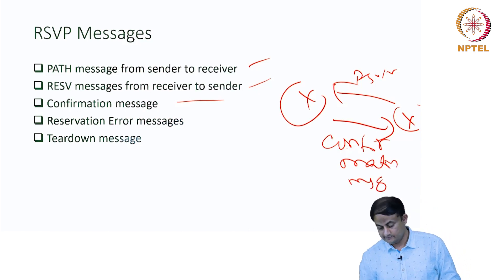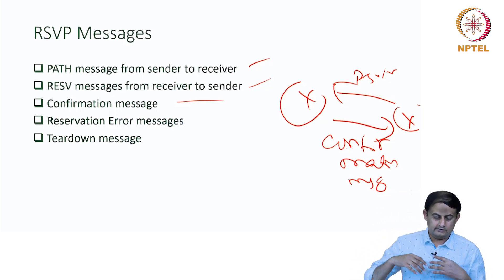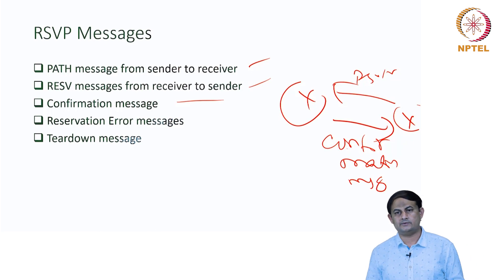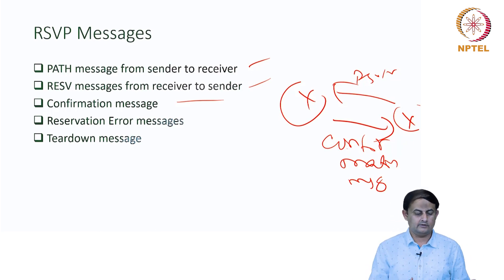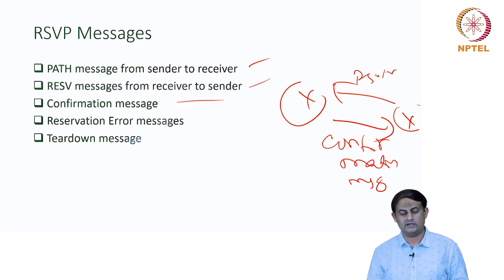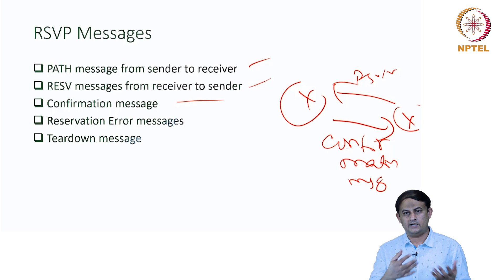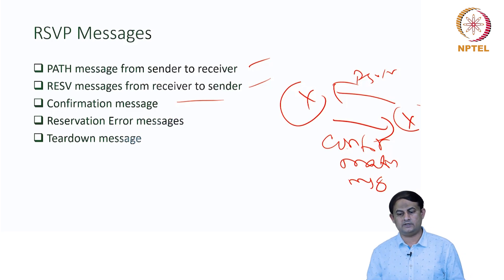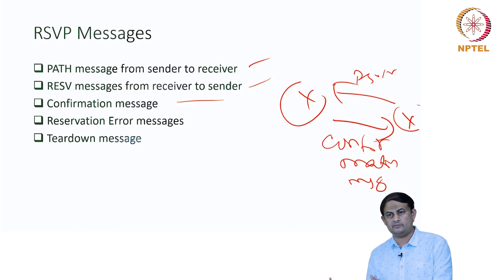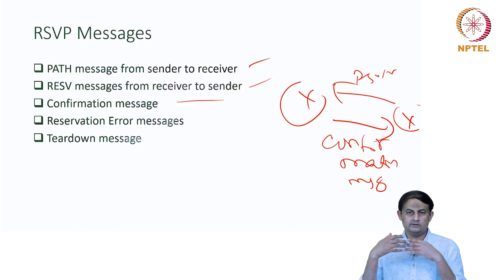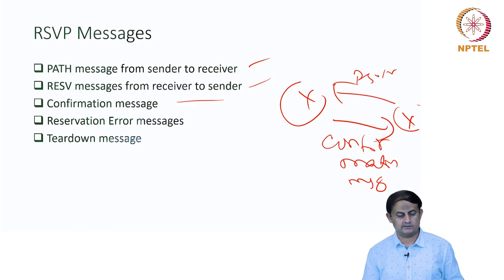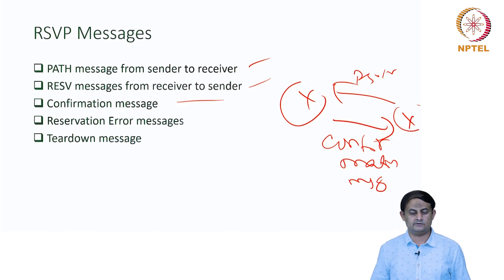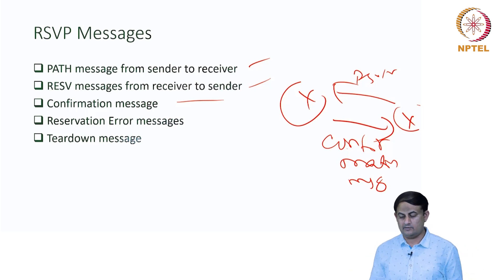The confirmation message confirms that whatever was asked for has been reserved. Occasionally, error messages may arise — called resource reservation error messages — which can be either a path error message or a reservation error message. If the path message cannot be transmitted to the receiver, the error generated is called a path error message. If an error occurs during the reverse transmission of the reserve message, that is called a reservation error message.